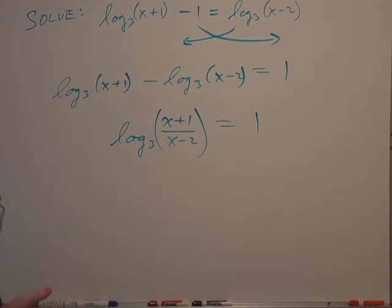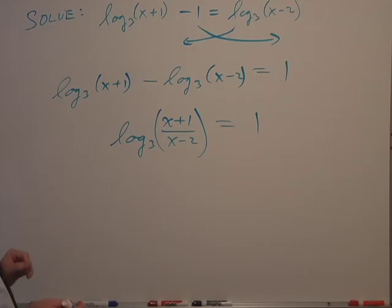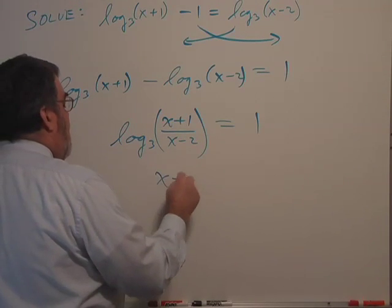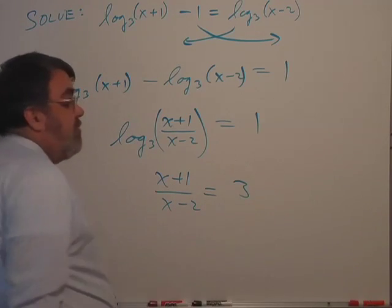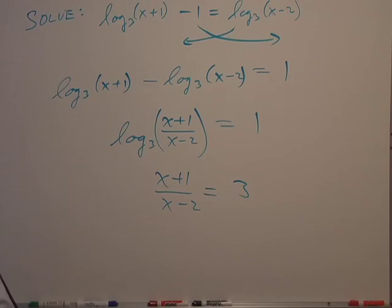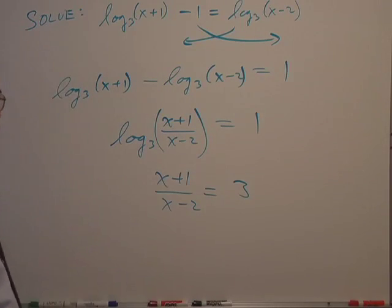And now if I convert this to an exponential equation, or literally raise both sides to the third power, I mean raise 3 to both sides powers, either way we get (x+1) over (x-2) equals 3. In the previous formulation the 3 was down here, the (x-2) was over there. Same thing.